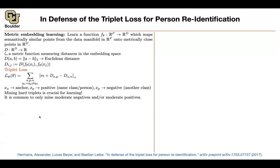The key idea here is that you don't want to search for positive and negative cases across your entire dataset, because there could be millions of images per identity. Looking for the hardest negative across your entire data to compute a single triplet is not feasible. Instead, the idea is to look for positive and negative cases within a mini-batch — pick a batch of data and find hard examples within that batch.